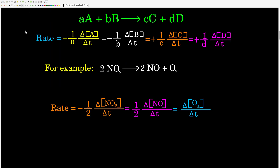For our generic chemical reaction, AA plus BB goes to CC plus DD. Remember the lowercase letters represent the coefficients in the balanced chemical equation and the capital letters represent the formula for the compound.